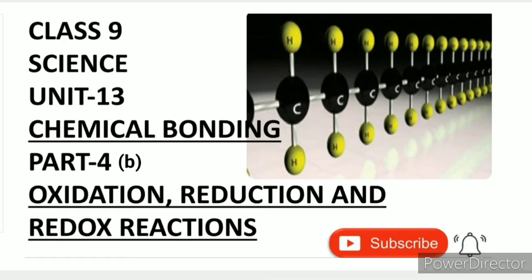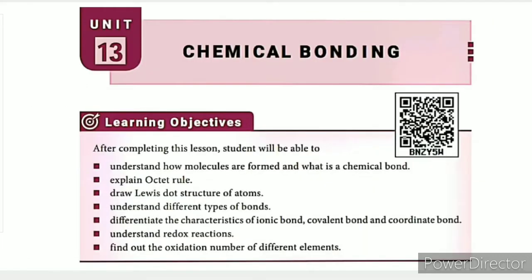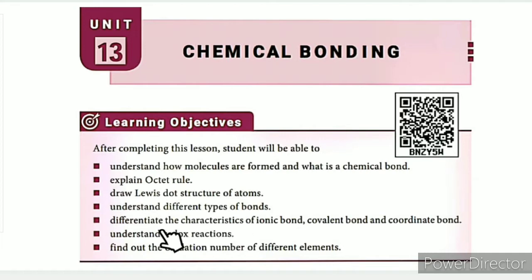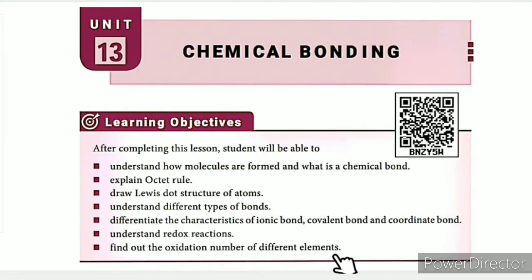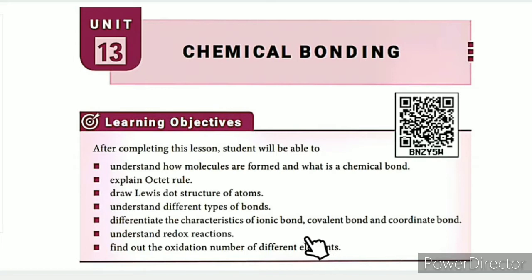Oxidation, Reduction and Redox Reactions. The learning objectives are: understand how molecules are formed and what is a chemical bond; explain the octet rule; draw Lewis dot structures of atoms; understand different types of bonds; differentiate the characteristics of ionic bond, covalent bond and coordinate bond; understand redox reactions; and find out the oxidation number of different elements.